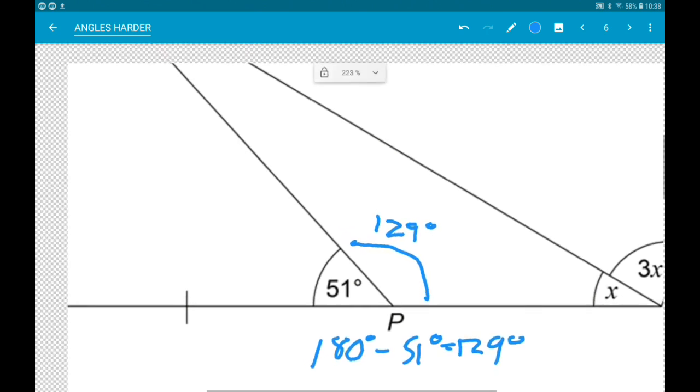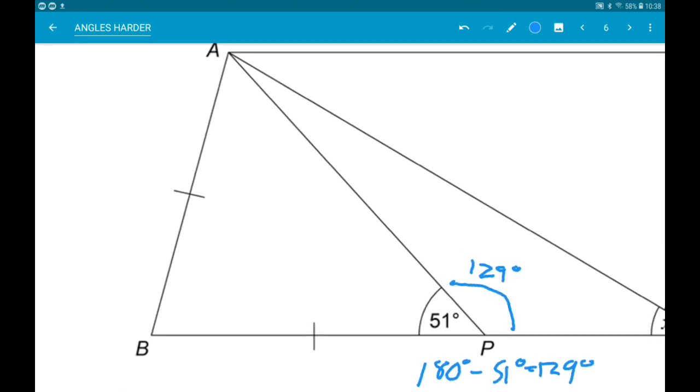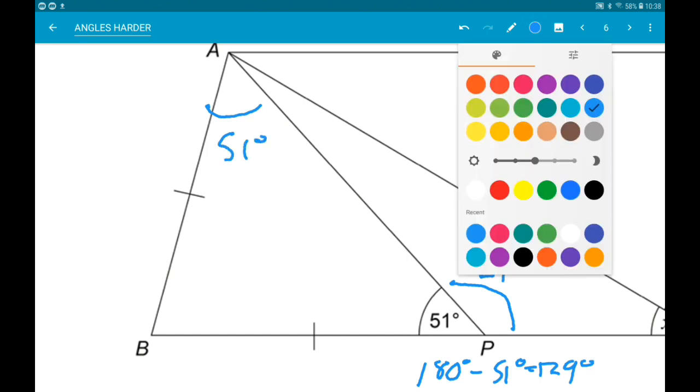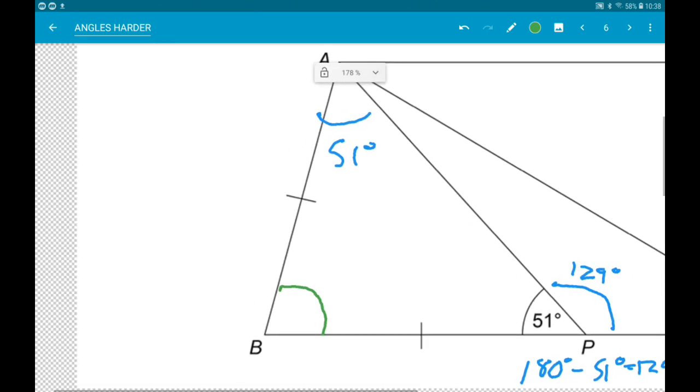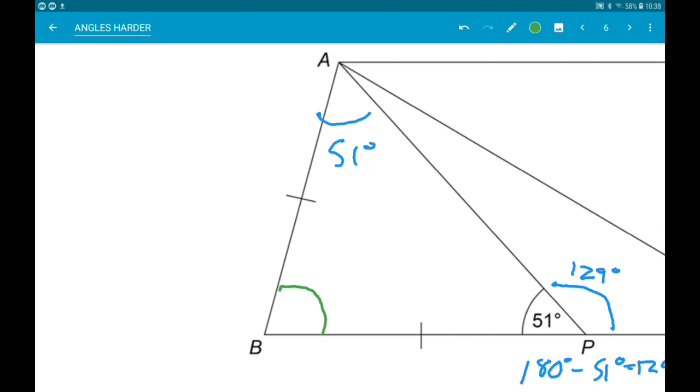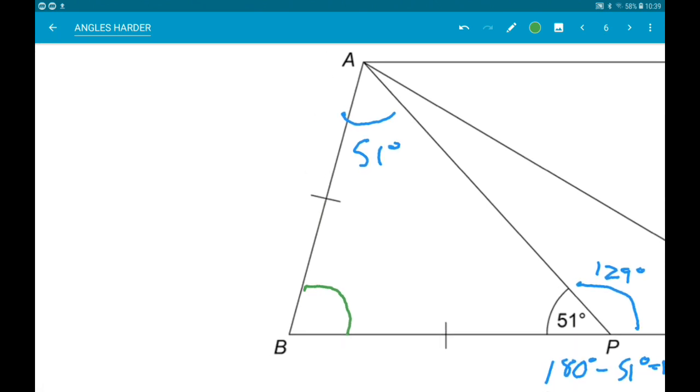Now again, on the left we have an isosceles triangle so that means this chap up here is also 51 degrees. Now what that allows us to do is work out this bottom left angle of the parallelogram. So 2 times 51 is 102. So 180 minus 102 gives us 78 degrees.